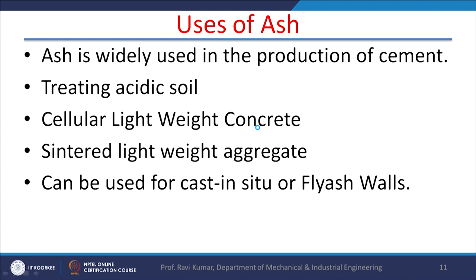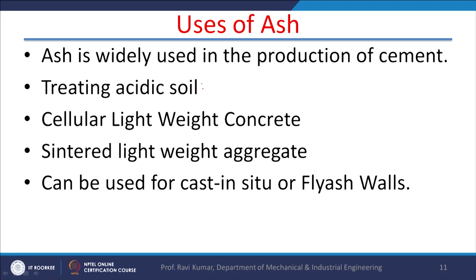Uses of ash: ash is widely used in the production of cement in cement industries. Nowadays it is mandatory to use fly ash and it is widely used in cement production. This ash can also be used for treating acidic soil — if the soil of any area is acidic in nature, ash can be spread or mixed with the soil to reduce the acidity level.